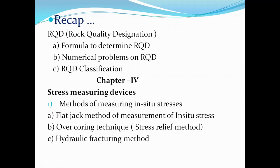As part of this experiment, a flat jack is placed into the slot and using a hydraulically operated pump, hydraulic pressure is increased on the flat jack until the distance between the two points returns to the same as the original virgin distance. The pressure at which the measuring points return to their original distance is known as the in-situ pressure.